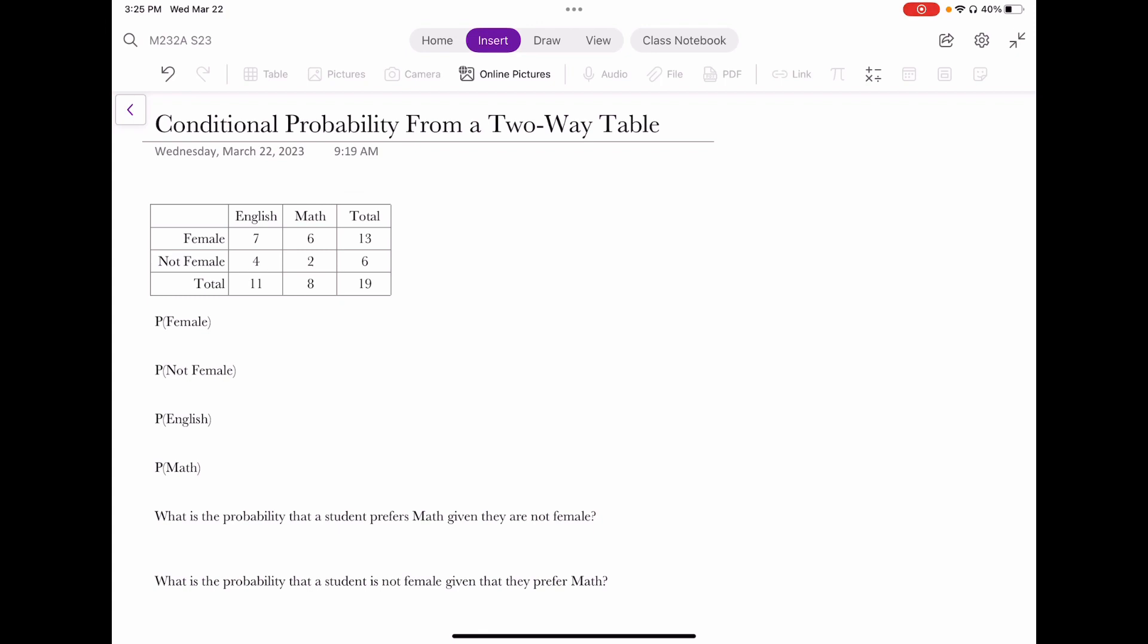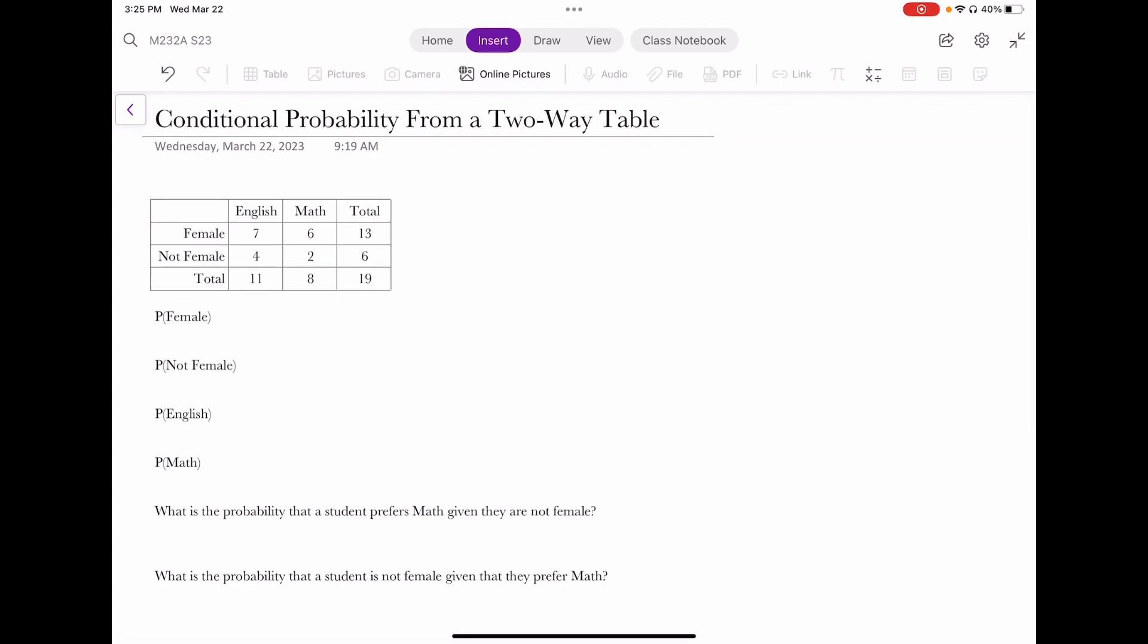The first four probabilities that I've asked to calculate here are not conditional probabilities. They are in general. What is the probability of being a female in general? This is a marginal calculation. The probability of being a female is being female out of the entire class. That is going to be 13 out of the total of 19.